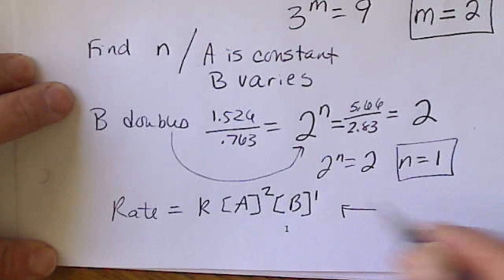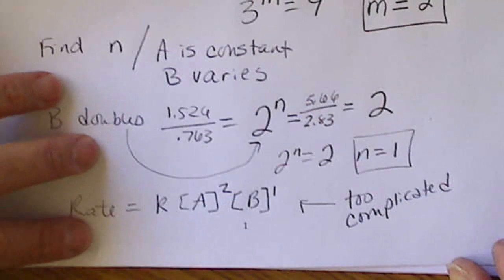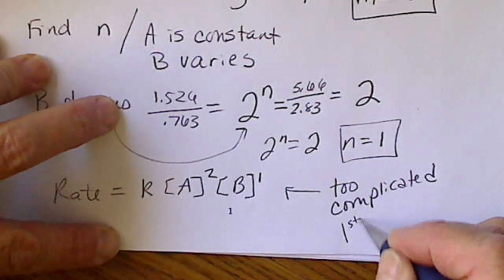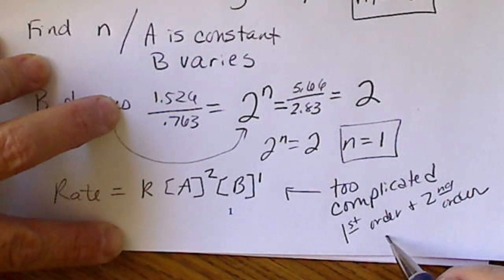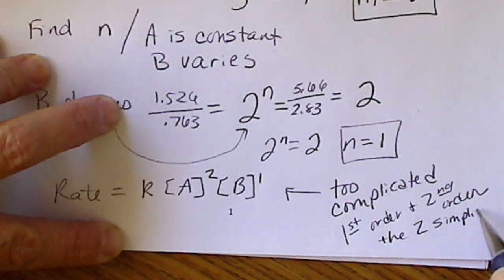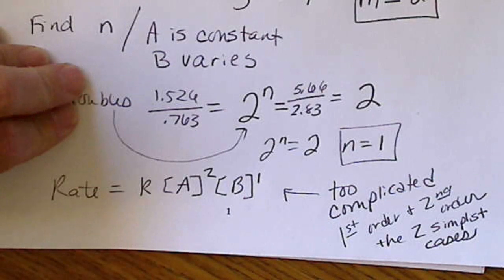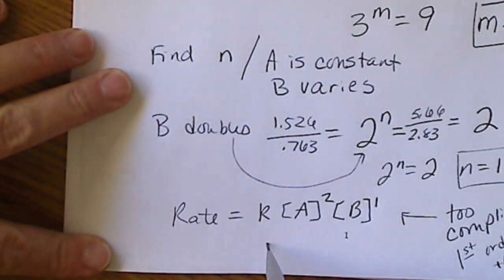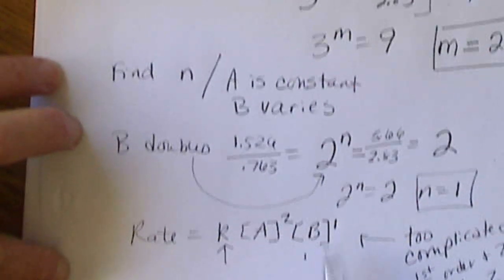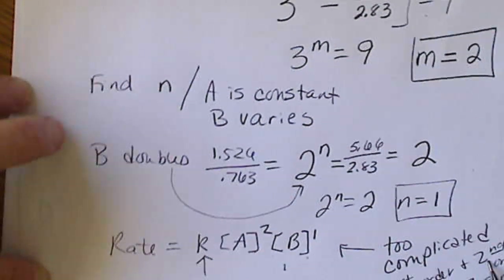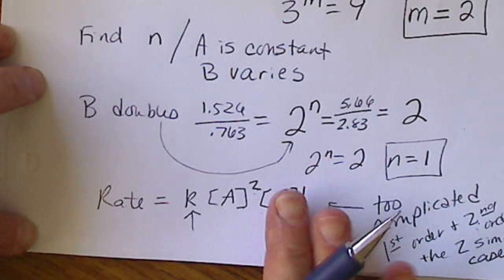This rate law is too complicated for instantaneous calculations. Recall that first order and second order are two very special cases. When we have a first or second order reaction, we can use those other equations — plugging values into a graph to see if the data is linear. This rate law is second order in A and first order in B, which is outside the realm of the two simplest rate laws. First order would be A to the first power, second order would be A to the second power, and neither one of those would involve B.